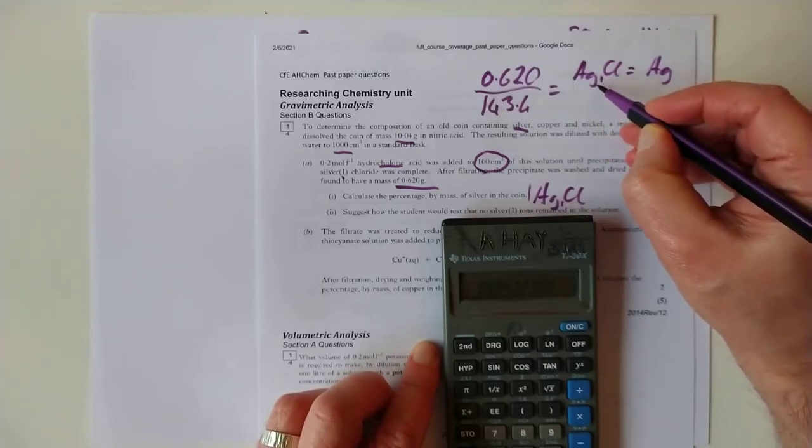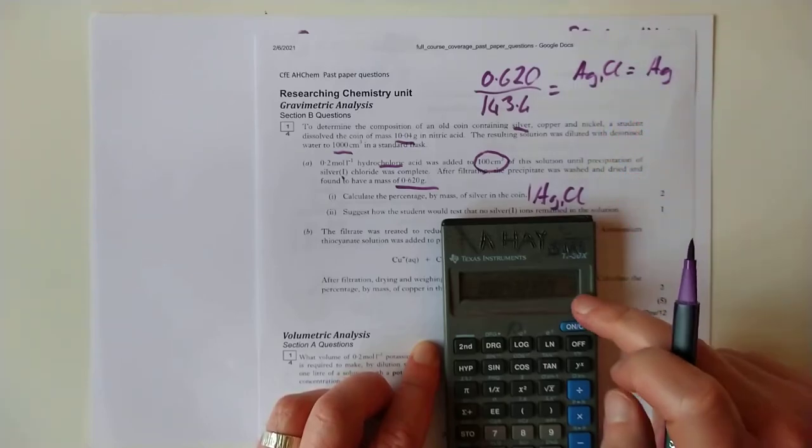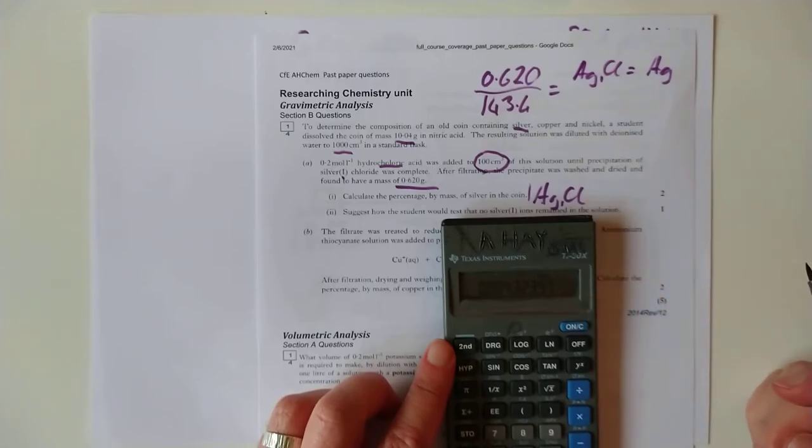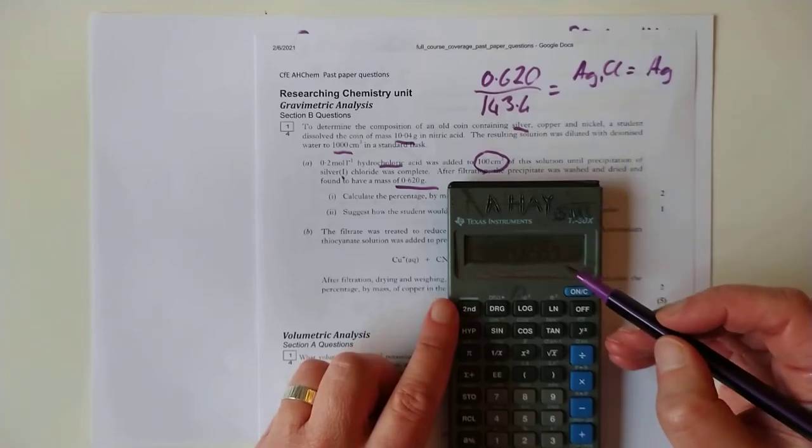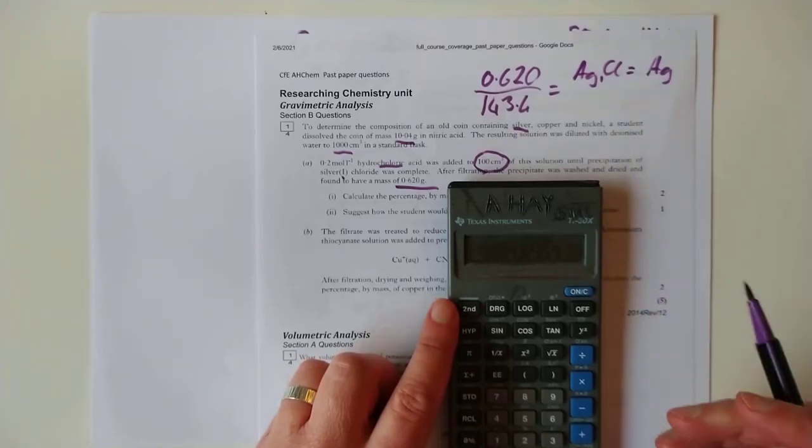So that's your AgCl, i.e. it's also equal to the moles of just silver, because the ratio is 1 to 1 here.